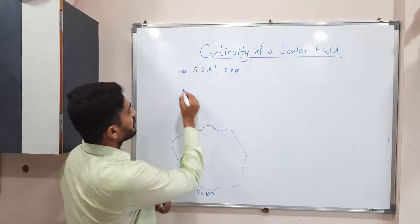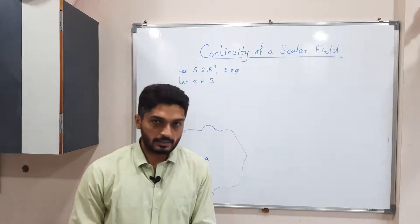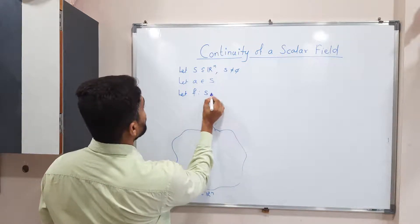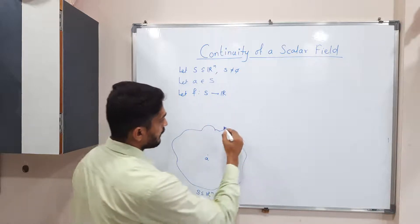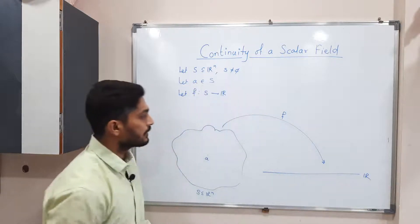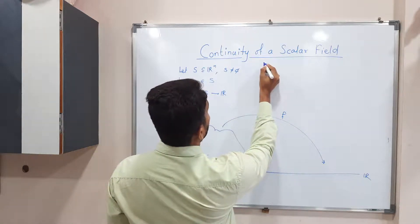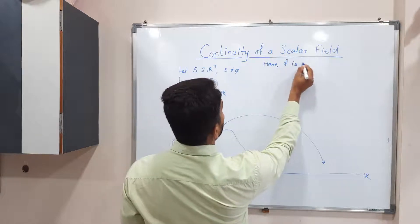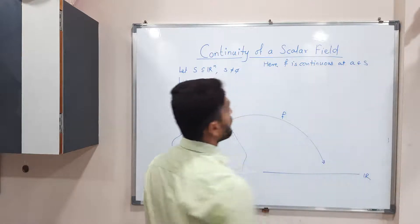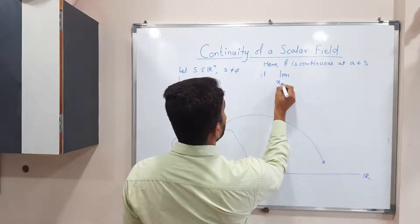We take one arbitrary point A of S, and we have a scalar field F, which is a function from S to R — the set of real numbers. When we say F is continuous at A, we require that the limit as X tends to A of F(X) exists.